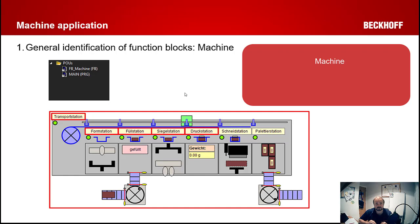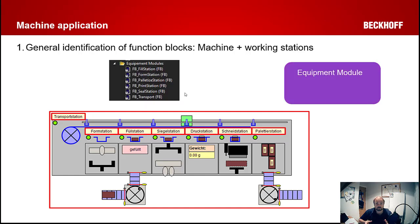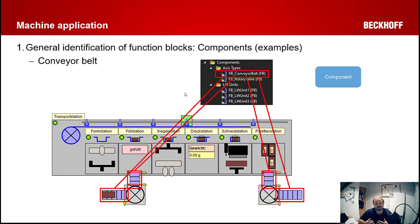Those sub-components would obviously be the equipment modules. The equipment modules then are their own classes, they encapsulate their own functionality and abstract it away. So how the filling station does the filling, the machine doesn't know or care. All it wants to be able to do is tell the filling station to fill a product, for example, or that a product is there to be filled. How it then achieves that is irrelevant to the machine.